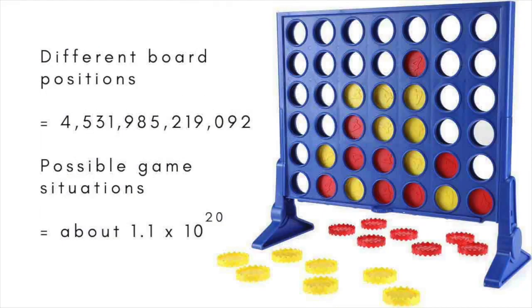The popular game of Connect Four is much more complicated than Tic-Tac-Toe. It's played using a 6 up by 7 across vertical board and two sets of colored counters. The winner is the first to make a line of four counters of their color. Altogether, there are 4,531,985,219,092 different board positions, and about 1.1 times 10 to the 20 possible game situations.